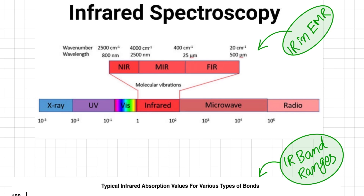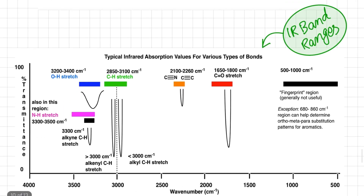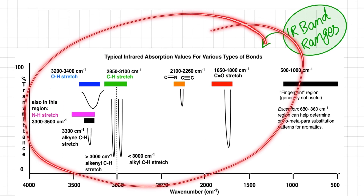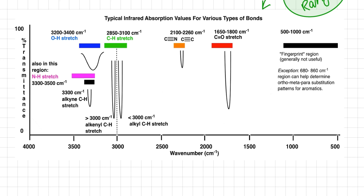Infrared spectroscopy is absorption spectroscopy dealing with vibrational transitions of molecules. A particular IR spectrum mentions various ranges of different functional groups, especially organic functional groups, and we can identify whether these are present in a particular molecule.